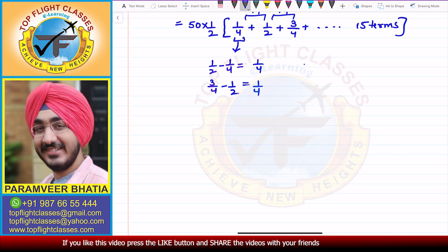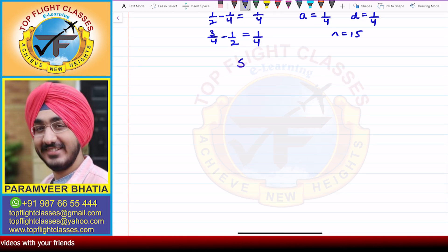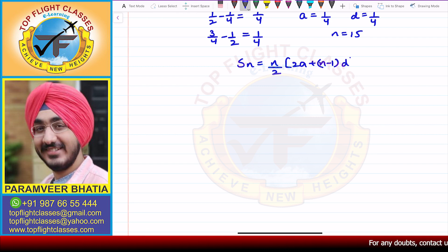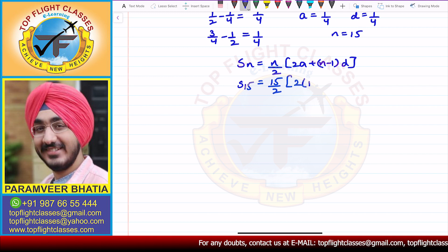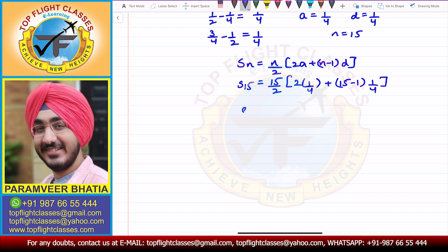We have a = 1/4, d = 1/4, and n = 15. The sum of first n terms of an AP is Sₙ = n/2 × [2a + (n−1)d]. So S₁₅ = 15/2 × [2 × (1/4) + (15−1) × (1/4)].